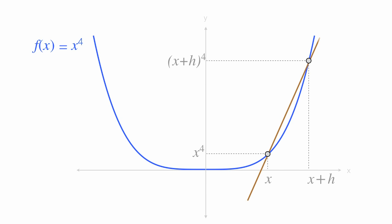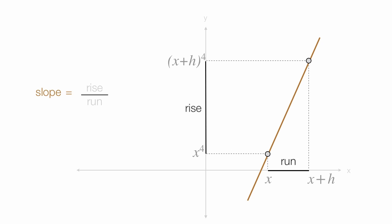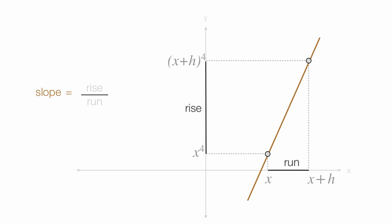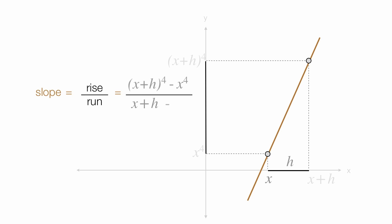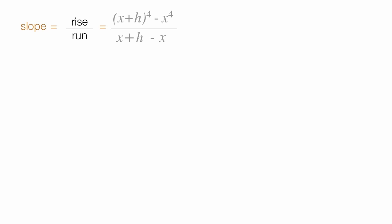Now I'm going to calculate the slope of this brown line. And if you recall, the slope is equal to rise over run. Rise is this distance here and run is the horizontal distance. So the slope of that brown line is rise over run, and I'll work that out for you algebraically now. Rise is x plus h to the fourth power minus x to the fourth power, and the run is x plus h minus x. The denominator is actually going to be h. Notice these two x's cancel out, so I'm left with h.